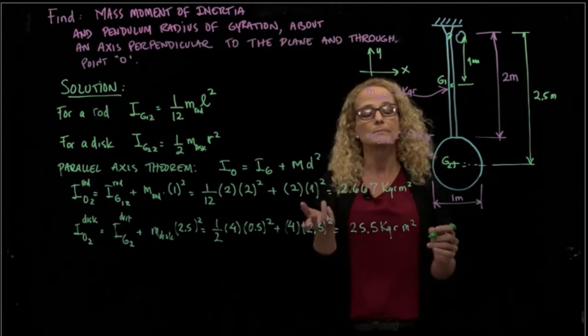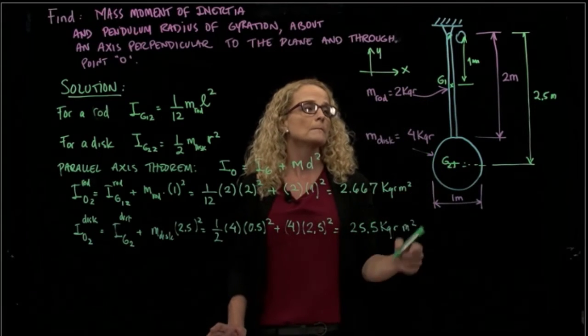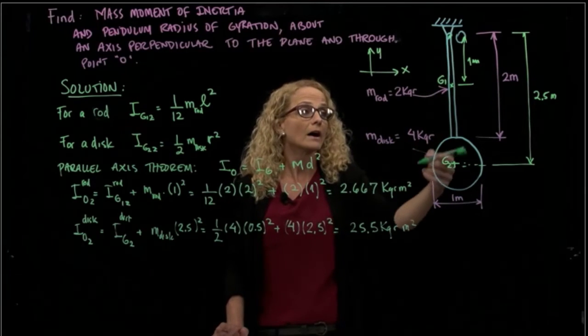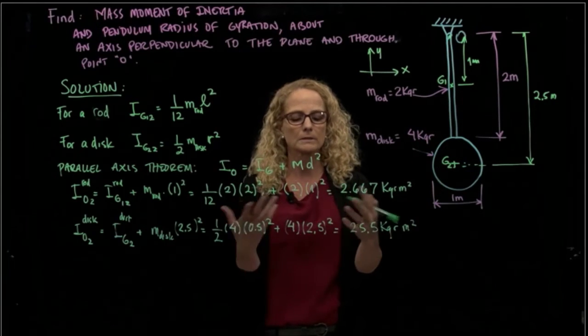And that gives me a value of 25.5 kilograms per meter squared. Do you see that this is much bigger than that one? And it's bigger, of course, because the mass is bigger, but it's bigger also because it's farther away. So that component makes a big difference.